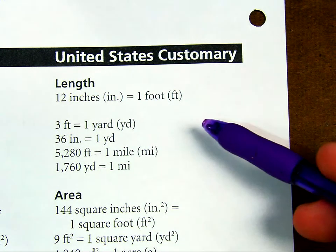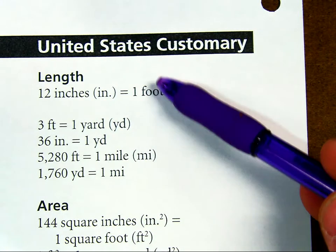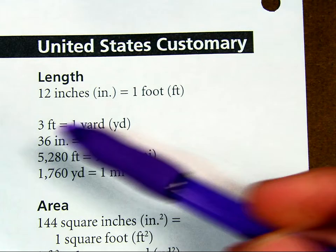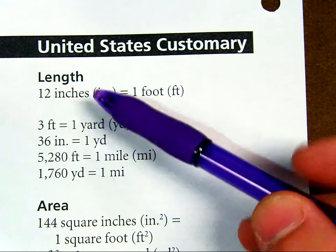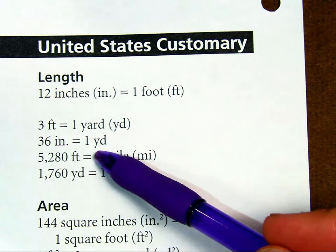For length, we know that there's 12 inches in one foot. So for every foot, there are 12 inches. In every yard, there's 3 feet. For every 36 inches, there's 1 yard.